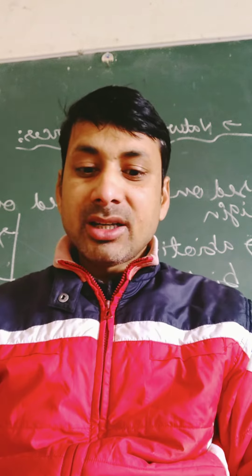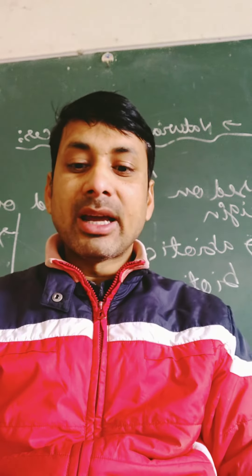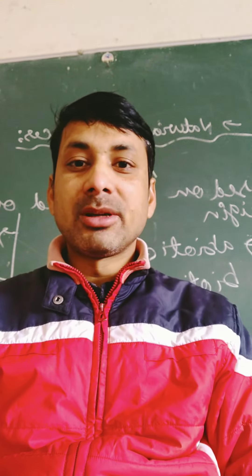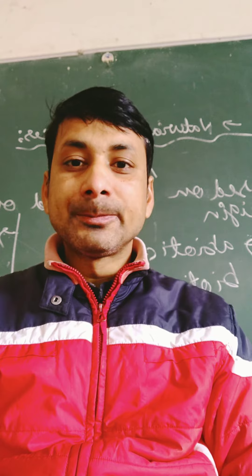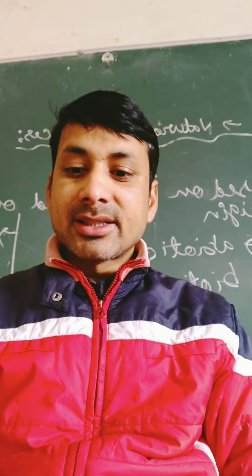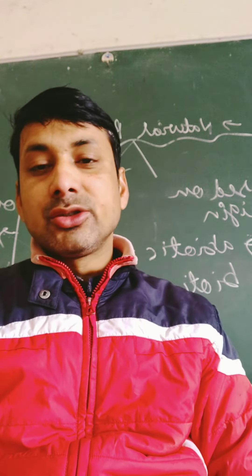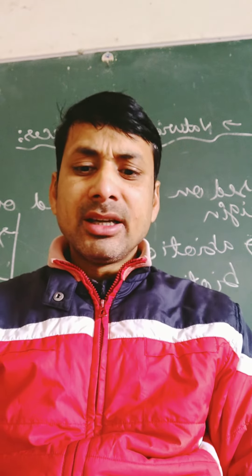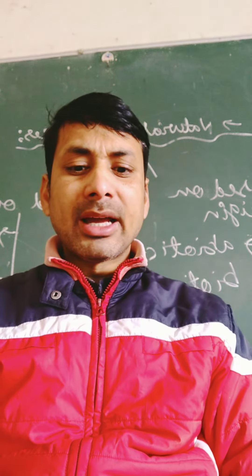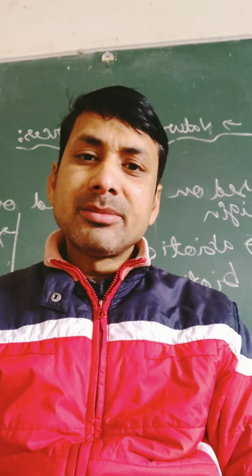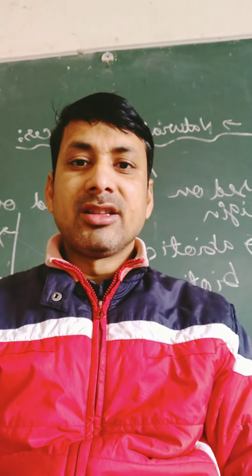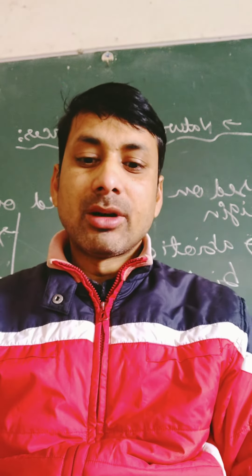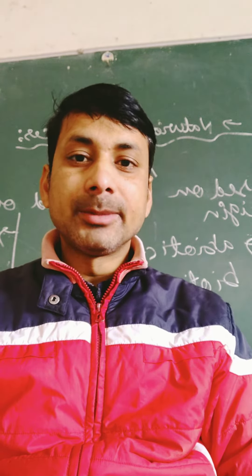Next है विक्रम सेट — विक्रम सेट की जो बुक है वो है A Suitable Boy, इन्होंने A Suitable Boy को राइट किया था. Next है जुम्पा लिहारी — जुम्पा लिहारी की जो बुक है वो है The Namesake. Option B को मैच करेंगे, थ्री से.